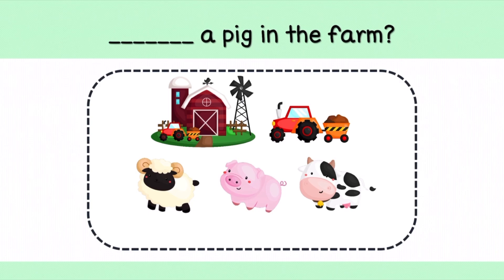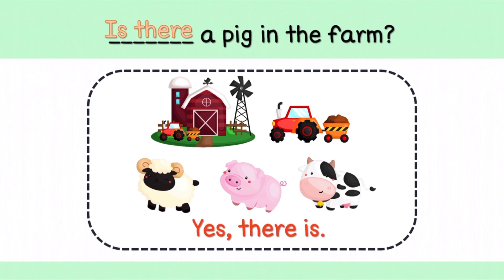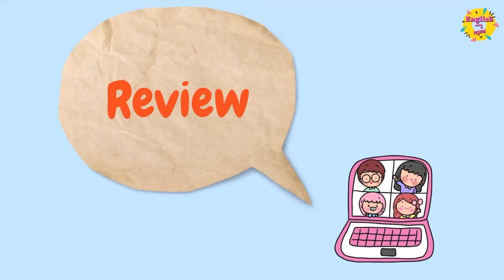คุณครูอ้นถามว่า ___ a pig in the farm? มีหมูหนึ่งตัวอยู่ในฟาร์มไหม? นักเรียนจะต้องเติม Is there นั่นเองค่ะ Is there a pig in the farm? ถ้านักเรียนสังเกตในรูปภาพ จะตอบว่า Yes เพราะในรูปมีหมูค่ะ Yes, there is นะคะ ถาม Is there นักเรียนก็ตอบ There is ถาม Are there นักเรียนก็ตอบ There are นั่นเองค่ะ